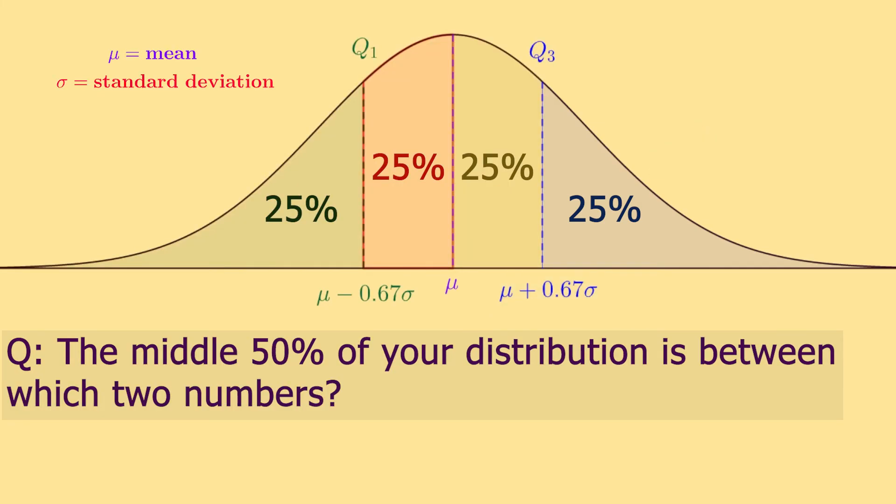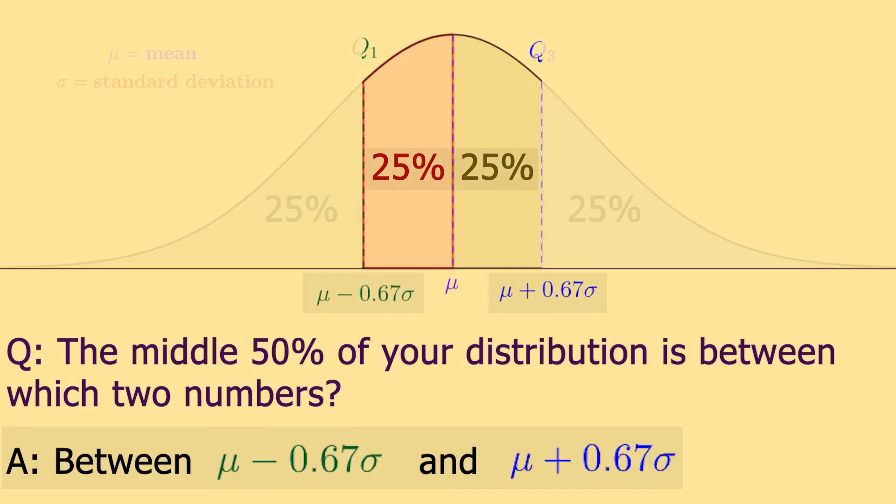If a question asks about where the middle 50% of your distribution lives, the middle 50% of your normal distribution would live between the first and the third quartile.